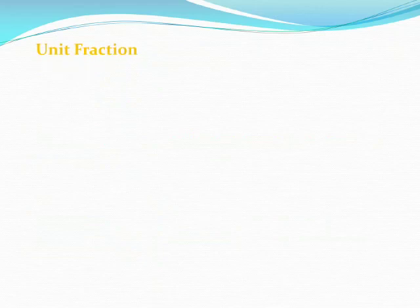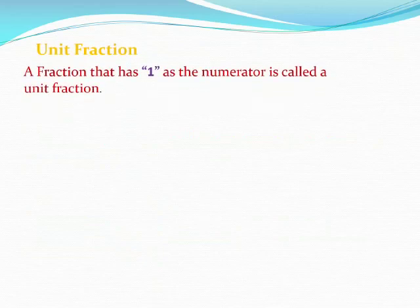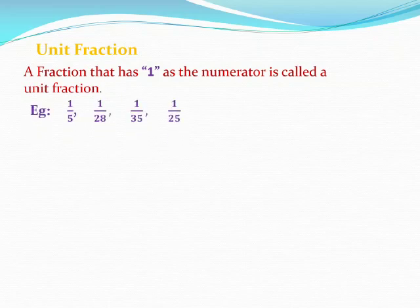Now let us see what is unit fraction. A fraction that has 1 as the numerator is called a unit fraction. Let us see some examples: 1 by 5, 1 by 28, 1 by 35, 1 by 25.